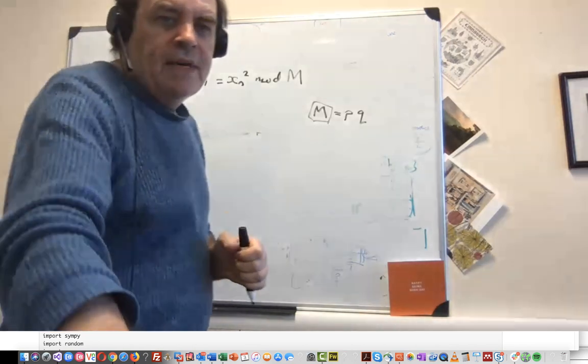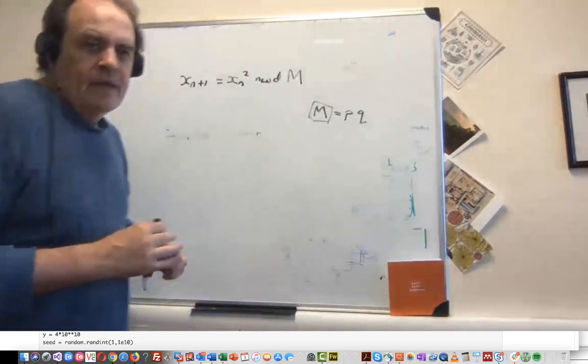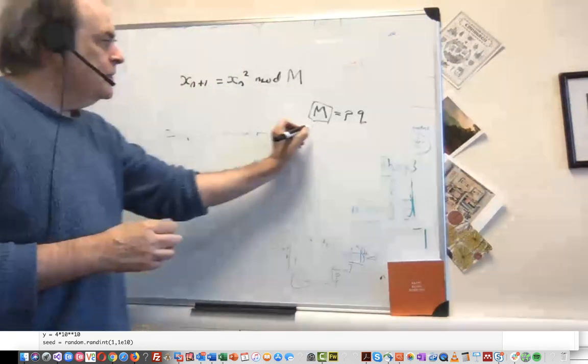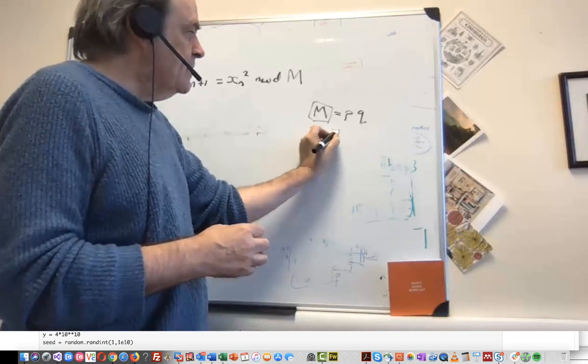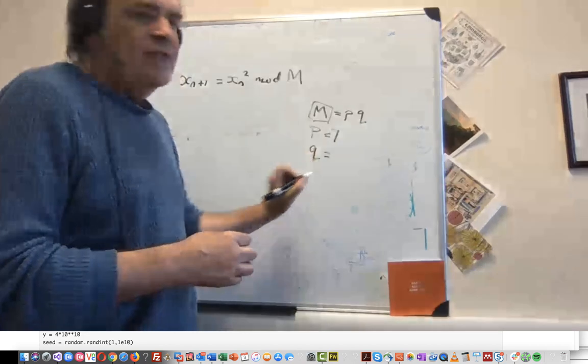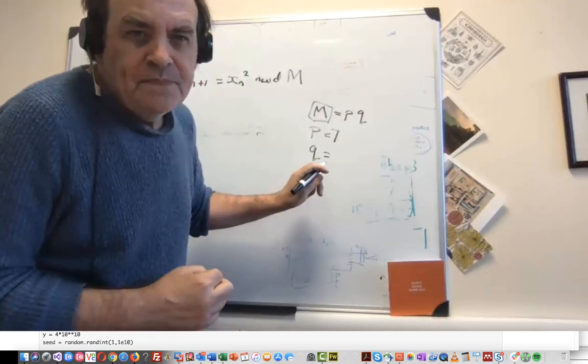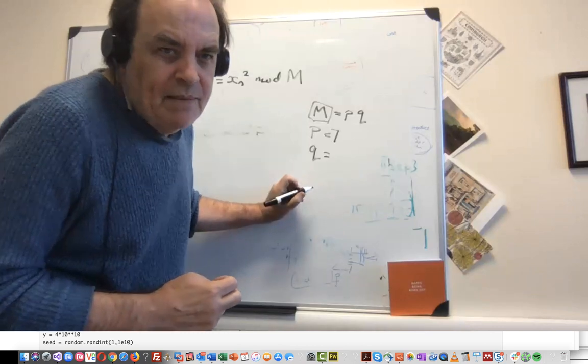So let's take an example here. I've shown a little bit of Python, but if we take a value of p equal to 7, that's a prime number, and q equal to, for example, 11.